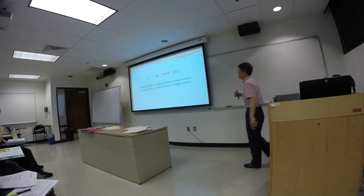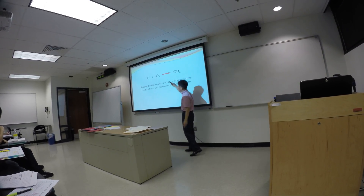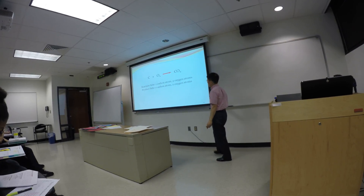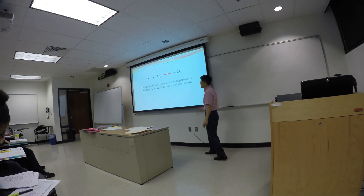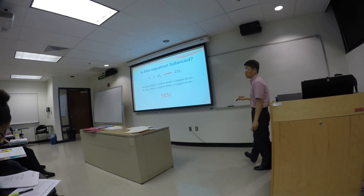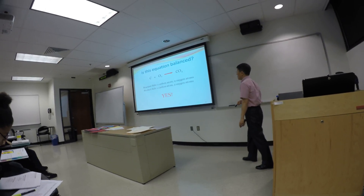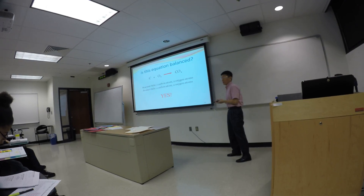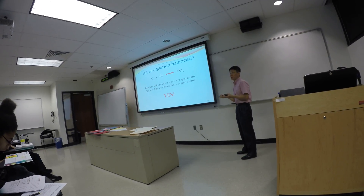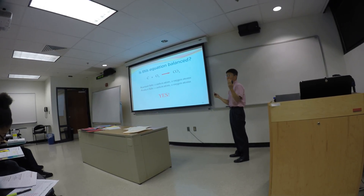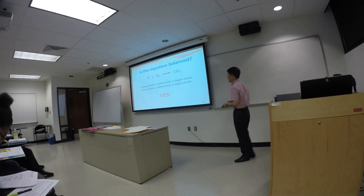On the reactant side, you count the total number of carbon atoms. On the product side, you count the total number of carbon atoms. You do the same thing for the oxygen atoms. From here we can say this equation is balanced. That's what we mean by balancing the chemical reaction equation — you are doing a simple inspection, a bookkeeping of the number of atoms on both sides.